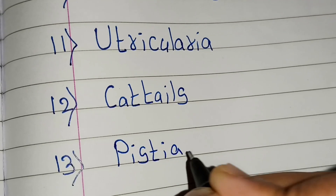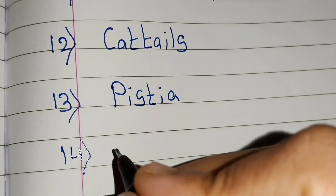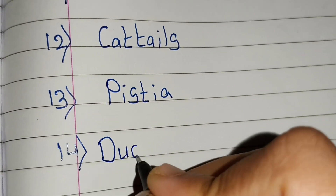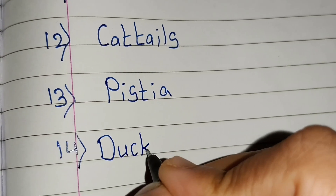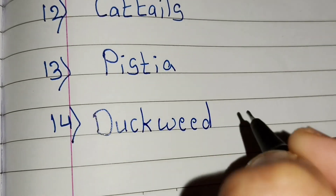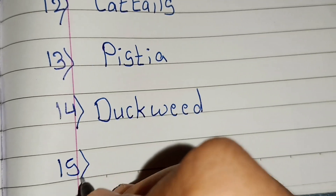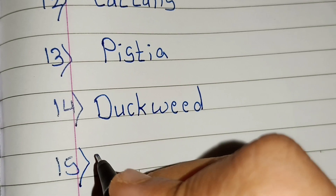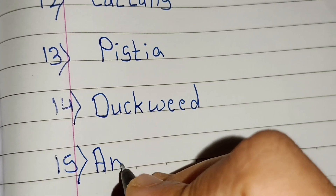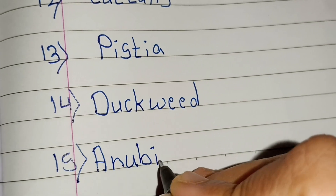Thirteenth, pistia. Fourteenth, water plant name is duckweed. Fifteenth, anubia nana. Anubia nana.